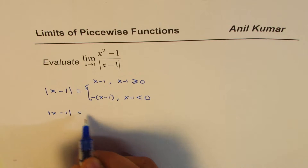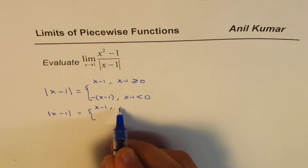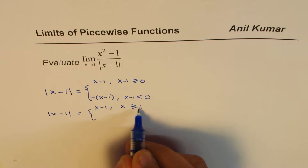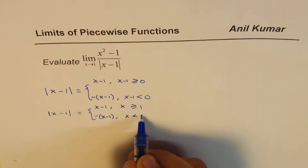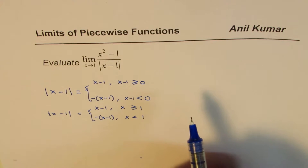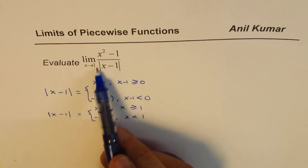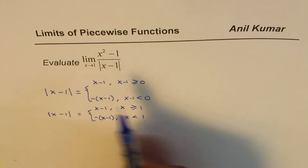So let me rewrite this. I am basically working on this inequality. Taking 1 to the right side, we get x is greater than or equal to 1 for the first case. And it is minus of x minus 1 when x is less than 1, taking the minus 1 to the right side. That gives us the absolute value — the denominator part of this limit.